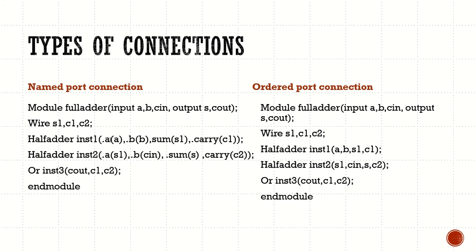In named port connection, dot A is the signal name of the instance and the A inside the bracket is the signal name of the module. So dot A connects the A signal of the instance to the A signal of the module; dot B connects B of the instance to B of the module; dot sum connects the sum signal of the instance to S1 of the module; and dot carry connects carry of the instance to C1 of the module.